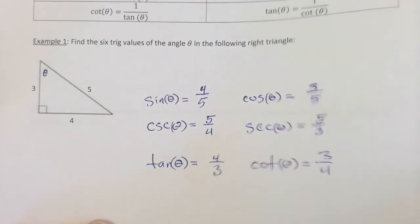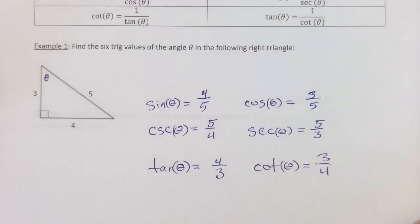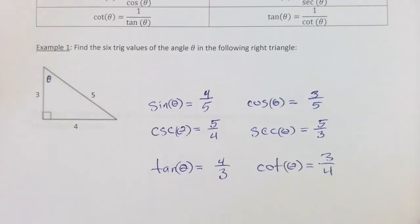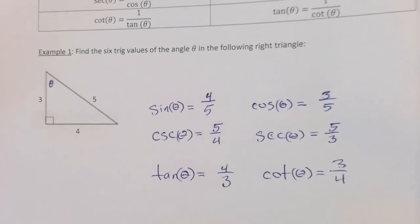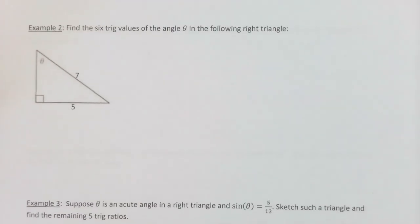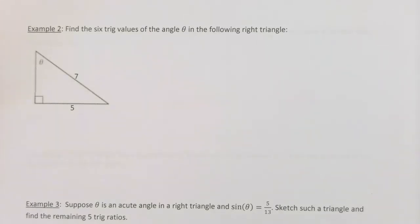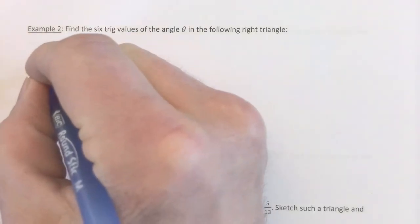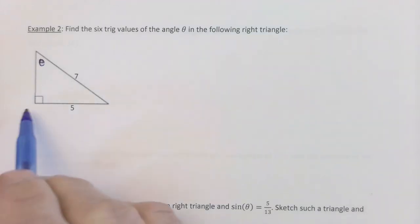I took a class in high school called physics that used a lot of trigonometry, but I had no trig training, so I got the five-minute explanation from my physics teacher and we were off to the races. Next example: find the six trig values of angle theta in the following right triangle — but wait, there's a missing leg. We have the opposite leg = 5 and the hypotenuse = 7.